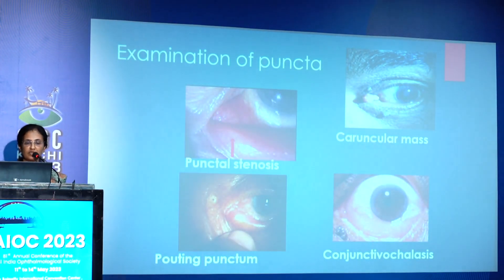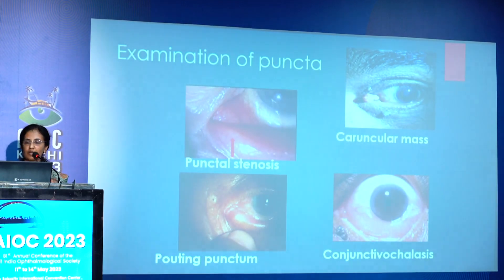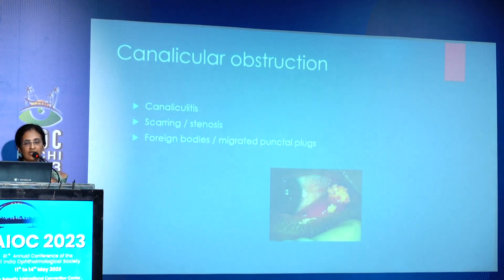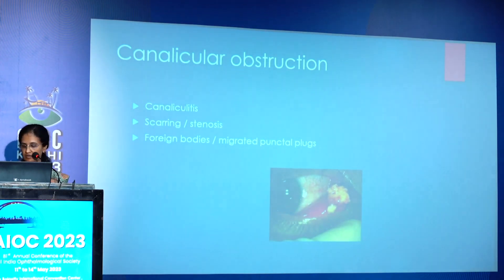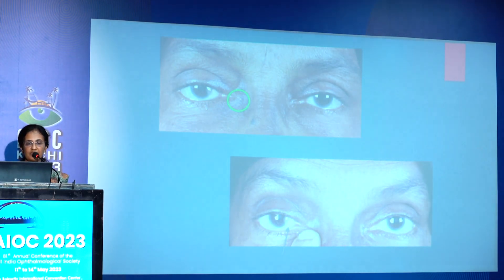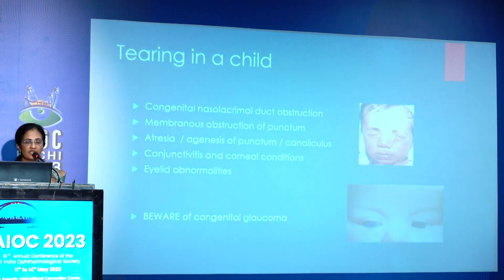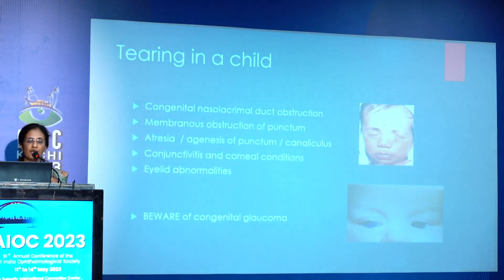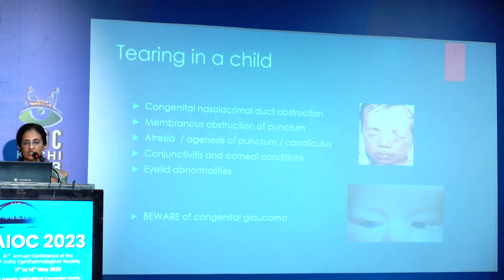Examination of the puncta: look for punctal stenosis, pouting punctum as in canaliculitis, any caruncular mass, or even conjunctiva obstructing the punctal orifice. Canalicular obstruction can be due to canaliculitis, scarring, stenosis, or foreign bodies such as migrated punctal plugs. Pressure over the lacrimal sac can sometimes show regurgitation of pus, known as the regurgitation or ROPLAS sign. In children, the most commonly seen cause is congenital nasolacrimal duct obstruction; other causes include membranous obstruction, atresia or total agenesis of the punctum or canaliculus, conjunctivitis, corneal conditions, eyelid abnormalities, and always rule out congenital glaucoma.